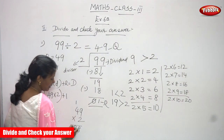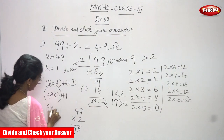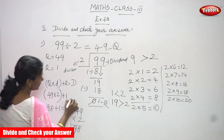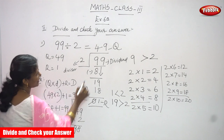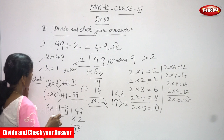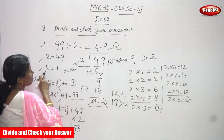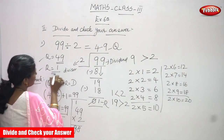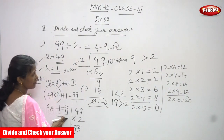4 twos are 8, plus the carried 1 equals 9. So 49 × 2 = 98, and 98 plus 1 equals 99. You get the dividend 99. That means whatever you found for the quotient and remainder — the quotient 49 and remainder 1 — both are correct because you got the dividend.